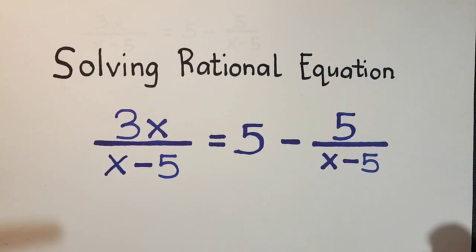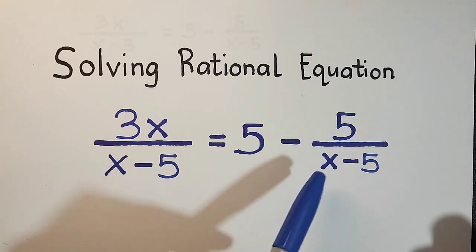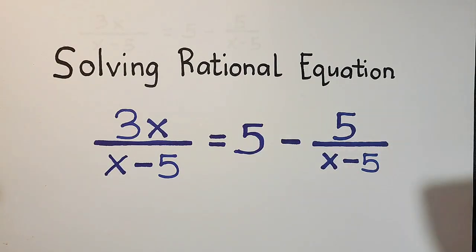So we have here 3x over x minus 5 is equal to 5 minus 5 over x minus 5. So without further ado, let's do this topic.